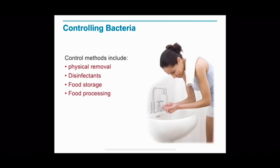Fourthly, food processing like boiling, frying, or steaming can sterilize many kinds of food by raising the temperature to a point where bacteria are killed. Finally, sterilization by heat of objects such as medical instruments at temperatures well above 100 degrees Celsius can prevent the growth of potentially dangerous bacteria. Most bacteria cannot survive such temperatures.